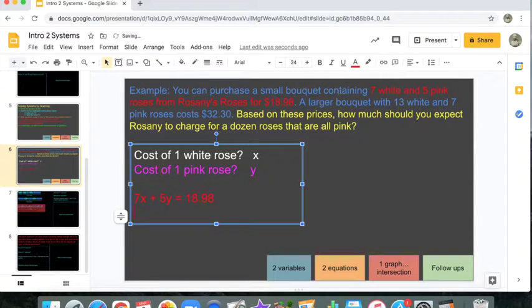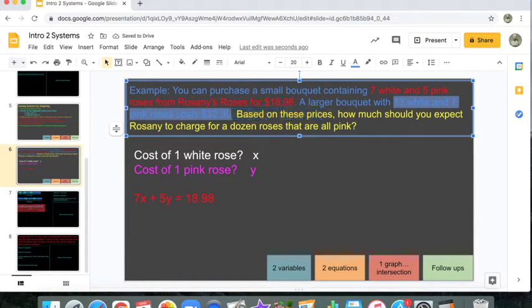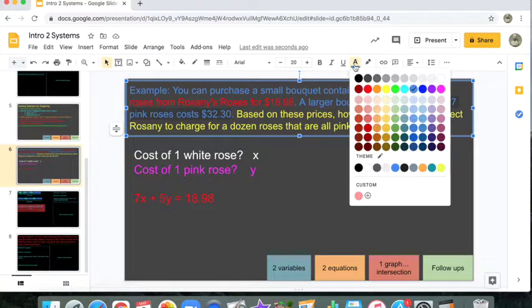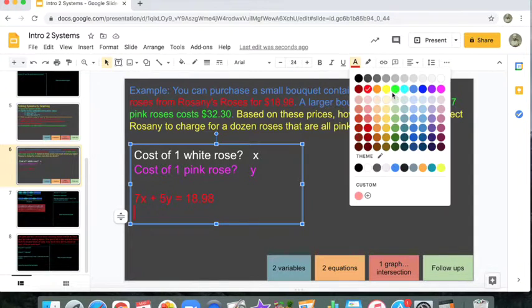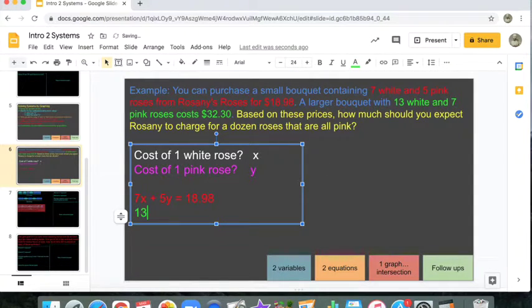And right here, 13 white roses, seven pink roses. So, 13 times the price of a white rose plus seven times the cost of a pink rose equals 32.30. Yes. Two variables defined. Two equations built based directly from the words in the problem.